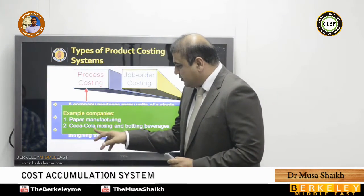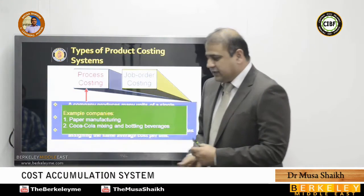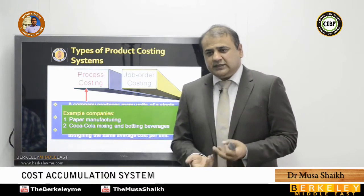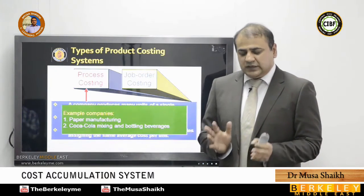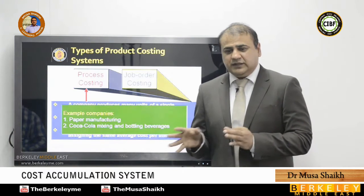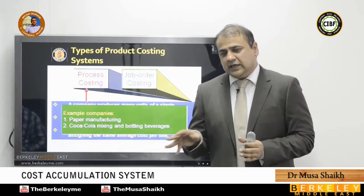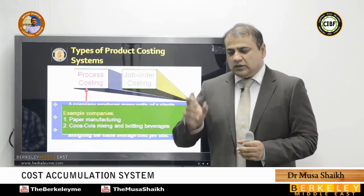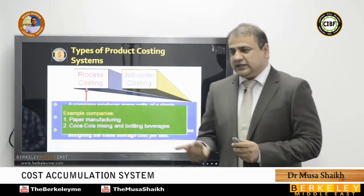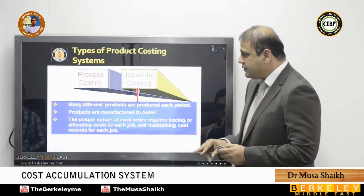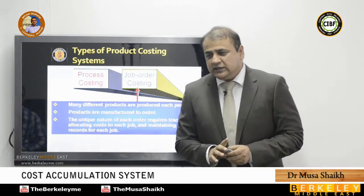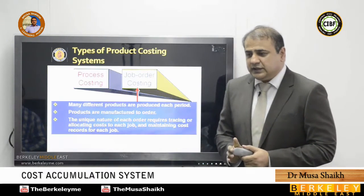Examples of process costing include paper manufacturing, Coca-Cola mixing bottles, and Pepsi. They mix beverages that are similar to one another — for a specific class, like Pepsi with lemon or Pepsi Diet, all units within that class are similar to each other.